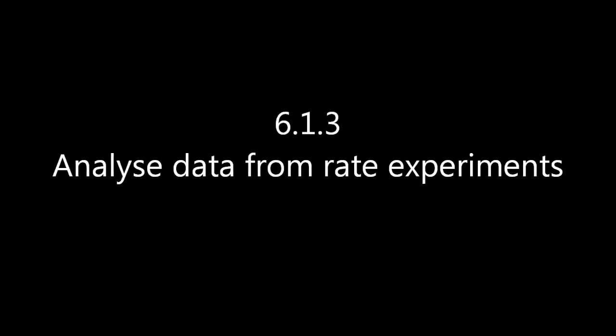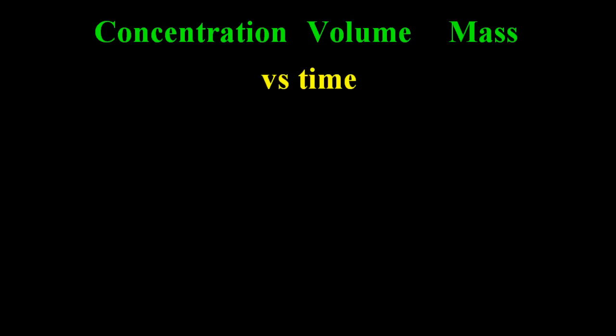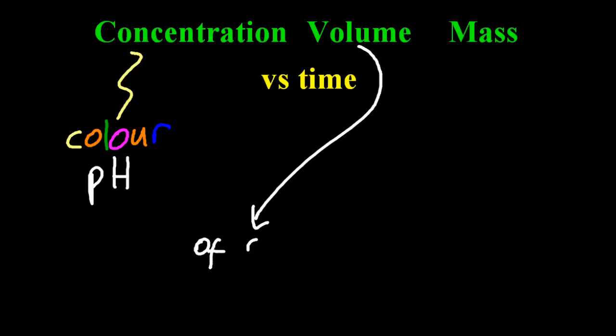This is essentially about analyzing graphs. The IB specifically mentions concentration, volume and mass. Graphs, concentration, well you could look at the change in color or pH to measure the different acid or alkali concentration.